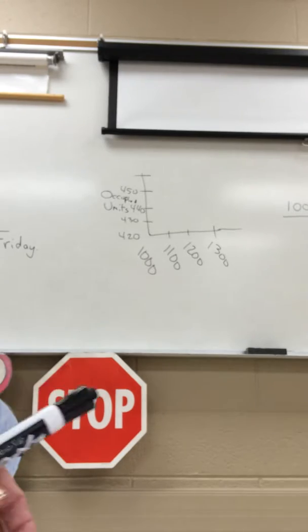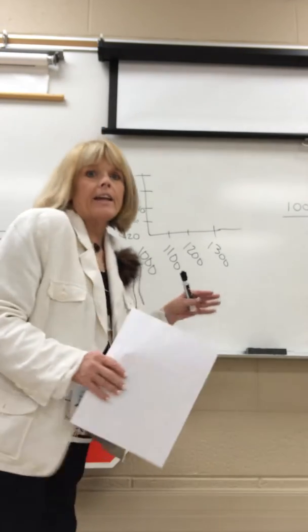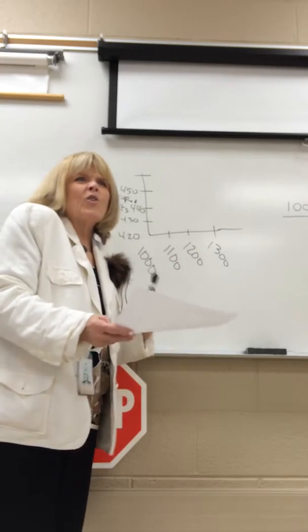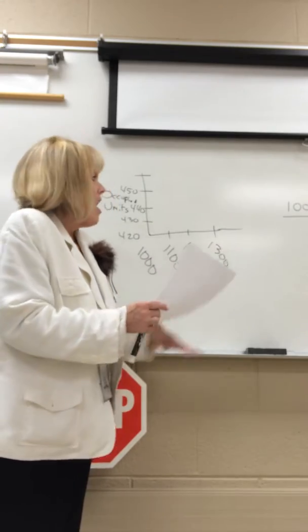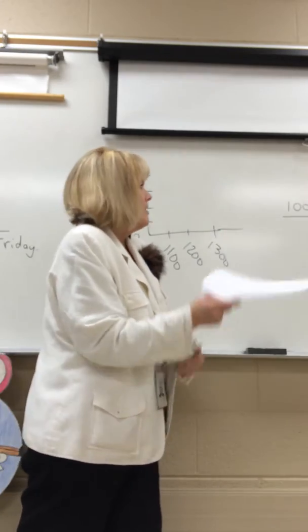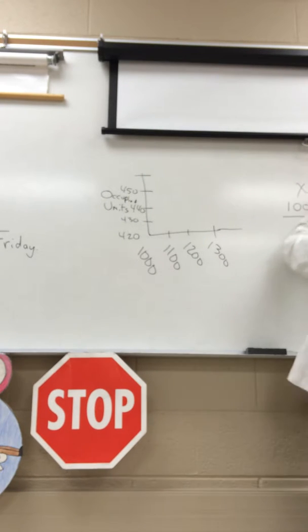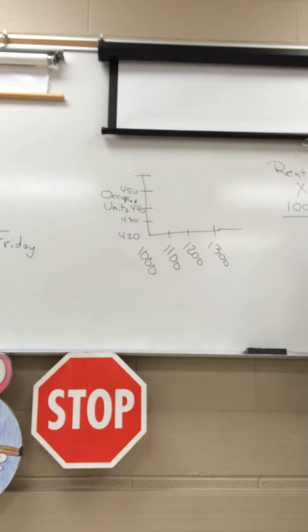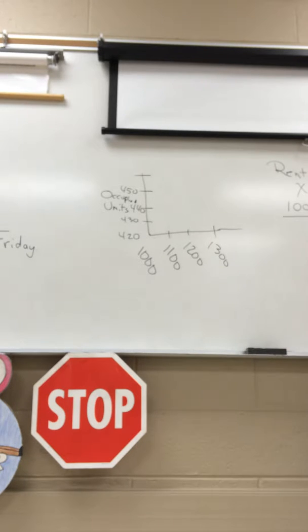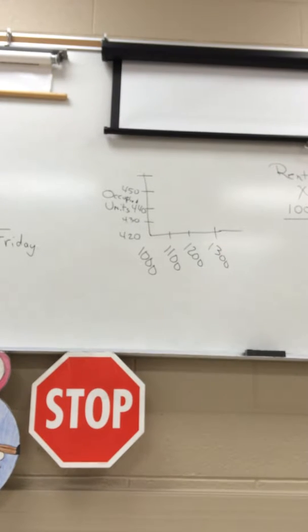Just to give you a feel for what's going on in the problem, let's make an XY table. X is the rent they pay, and Y is the number of occupied units. So if the rent is a thousand dollars, all 420 units will be occupied.